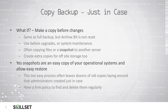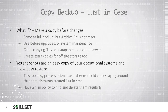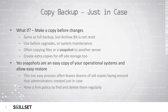You can also make a copy backup. A copy backup is the same as a full backup, but we are not changing the archive bit. This type of backup is done in addition to your normal backup procedures — typically before a system upgrade or maintenance. Often before making changes to a server, we will simply copy the files or take a snapshot and move it to another server in case something goes wrong. We could also create an extra copy for off-site storage. Snapshots are a full copy of your operational system and can be used to restore the system if something goes wrong.